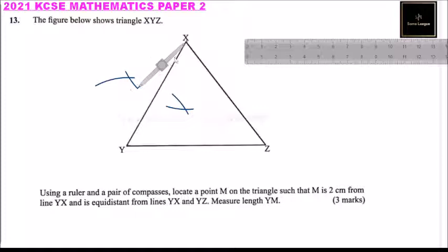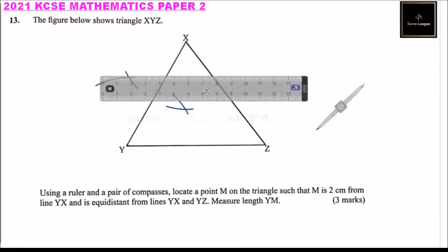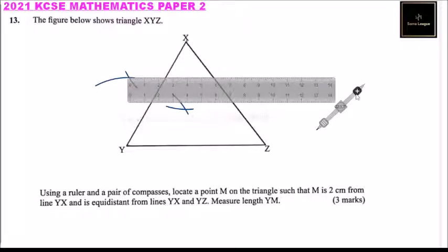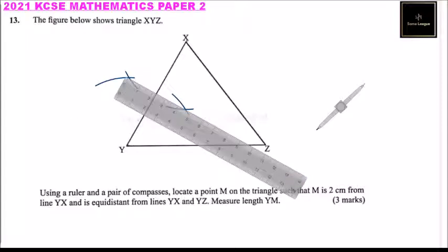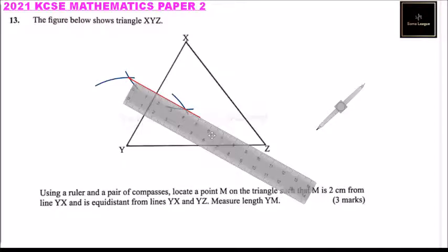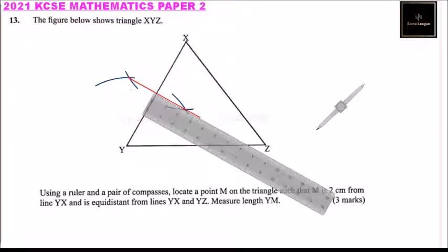Then you use a ruler to draw a line there — that line is perpendicular to our line. So you draw the line, and from there you can now measure two centimeters. You use a ruler and measure the point two centimeters from the line YX. So this is where we have our mark for two centimeters.